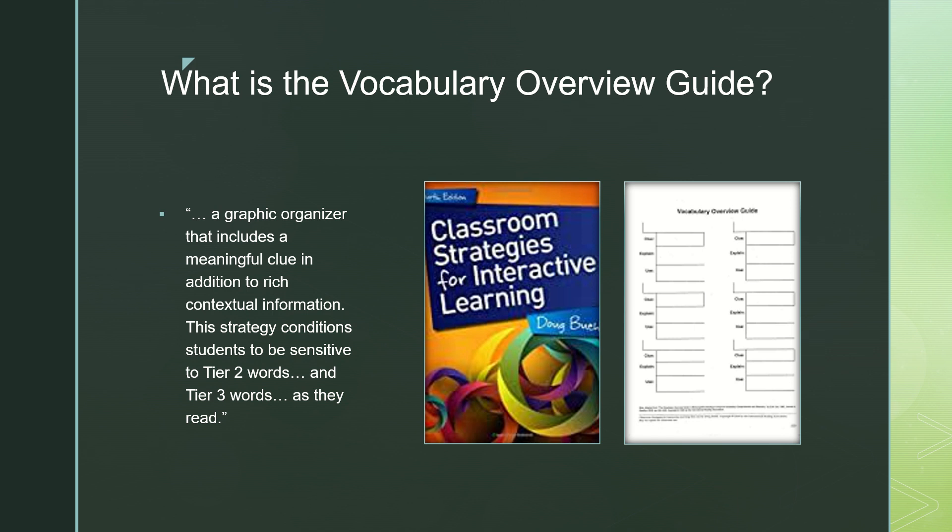It is a six-step strategy. The first step is the selection of words that are connected to key themes and ideas. An example in The Great Gatsby would be bootlegging. The second is a knowledge rating activity, where students go through and mark words as K, H, S, or N. K is know it, H is has a hunch, S is seen it but not sure, and N is never heard of it before today.